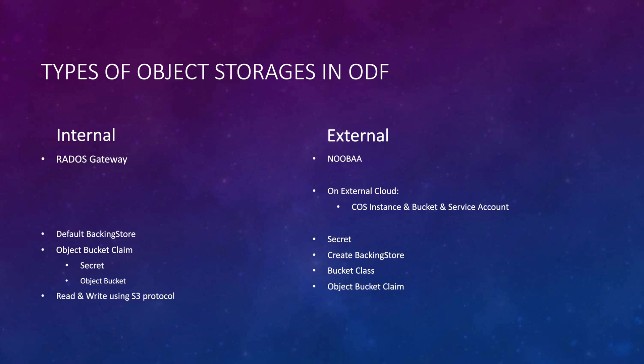Then we are going to pick one of the external public clouds — I'm going to pick IBM container object store — and create a bucket on that particular public cloud. Using the same OpenShift Data Foundation functionality like backing store, bucket class, and object bucket claim, you can read and write data into the object store on the public cloud. I will be using the same AWS CLI to perform the S3 protocol operations.